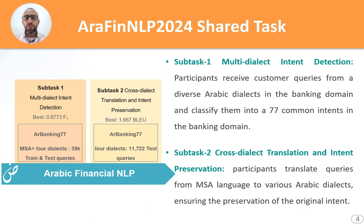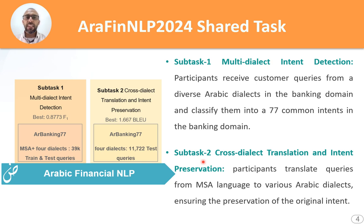This shared task consists of two sub-tasks. The first one is the multi-dialect intent detection, where the participant will receive customer queries in the banking domain across different Arabic dialects and must classify them into one or many of the commonly known 77 intents in the banking domain. The other task is cross-dialect translation and intent preservation, where the participant receives an MSA query and must translate it into multiple other Arabic dialects while preserving the original intent.